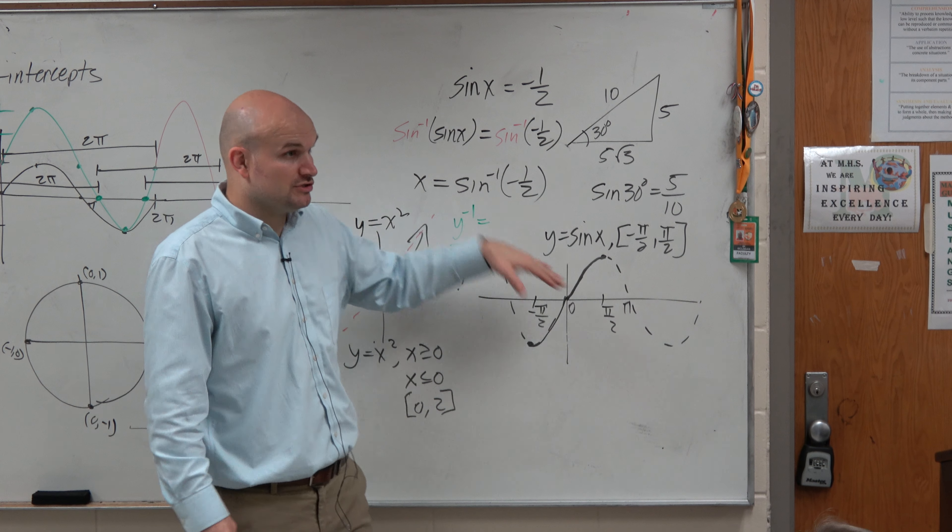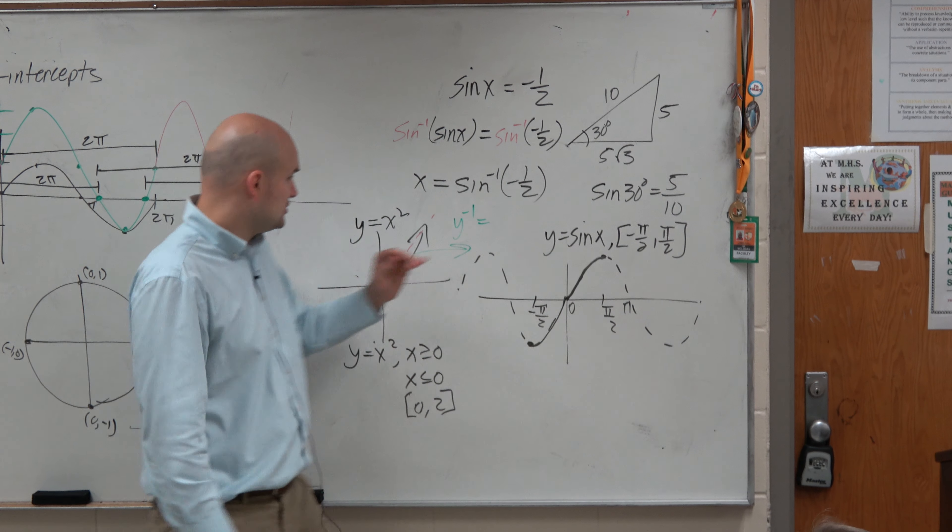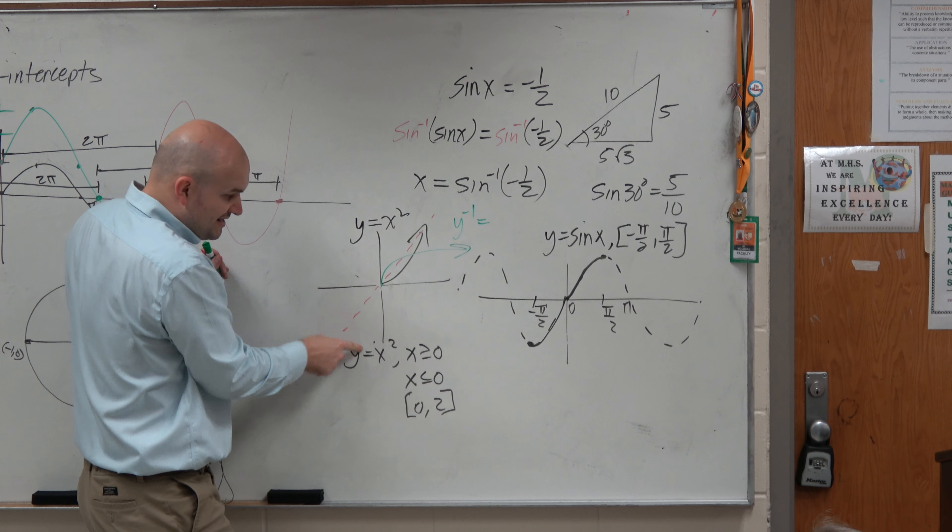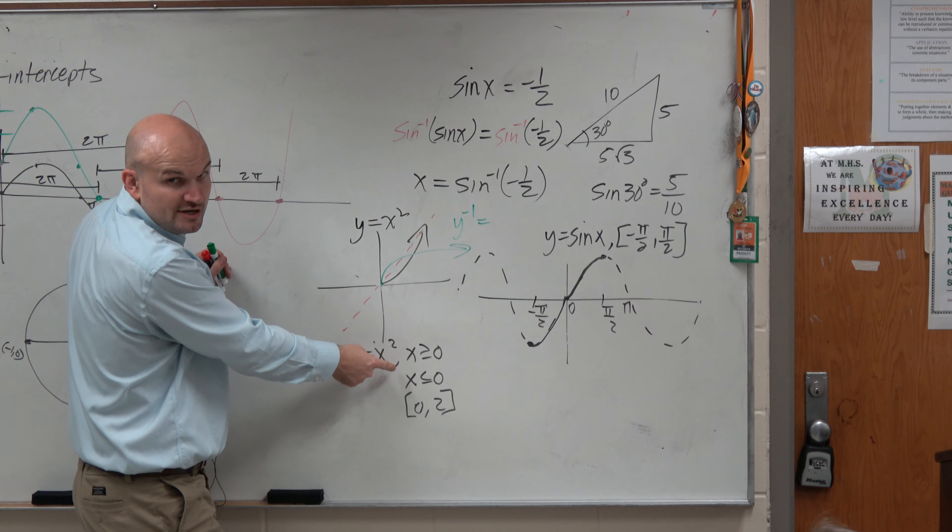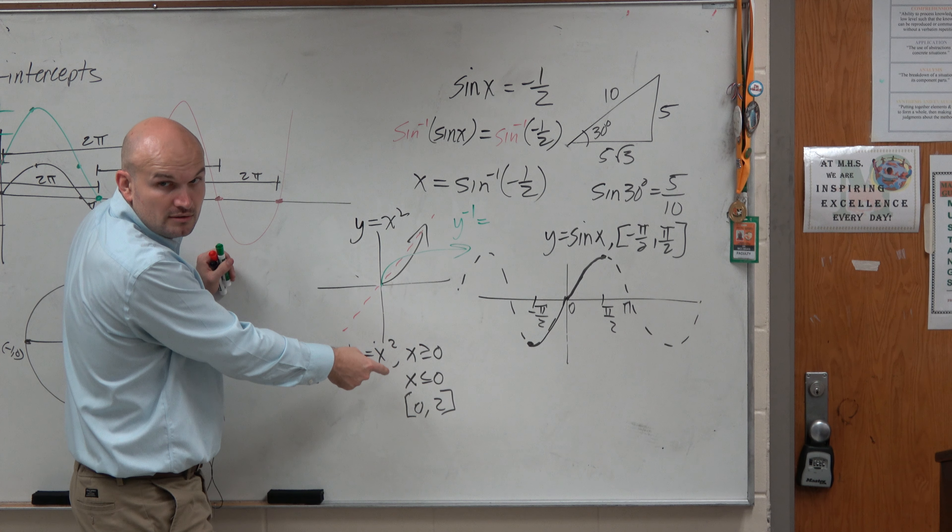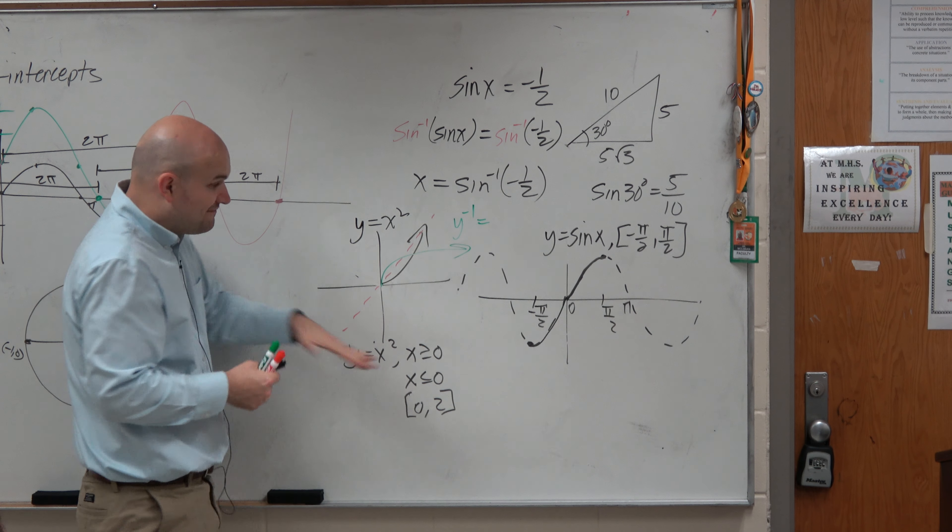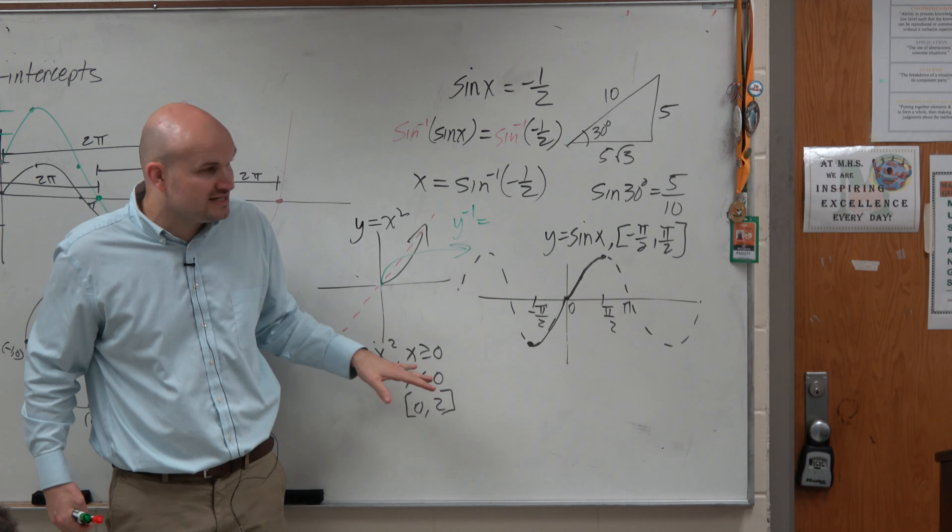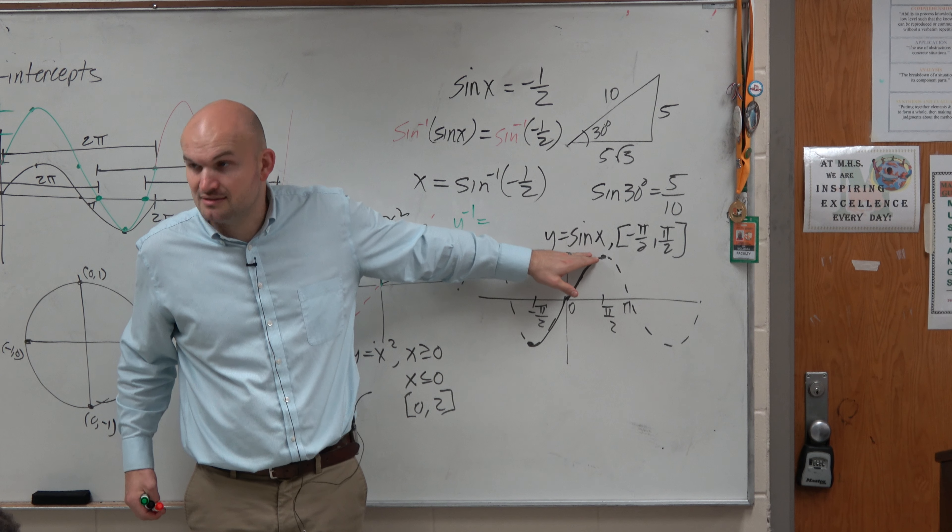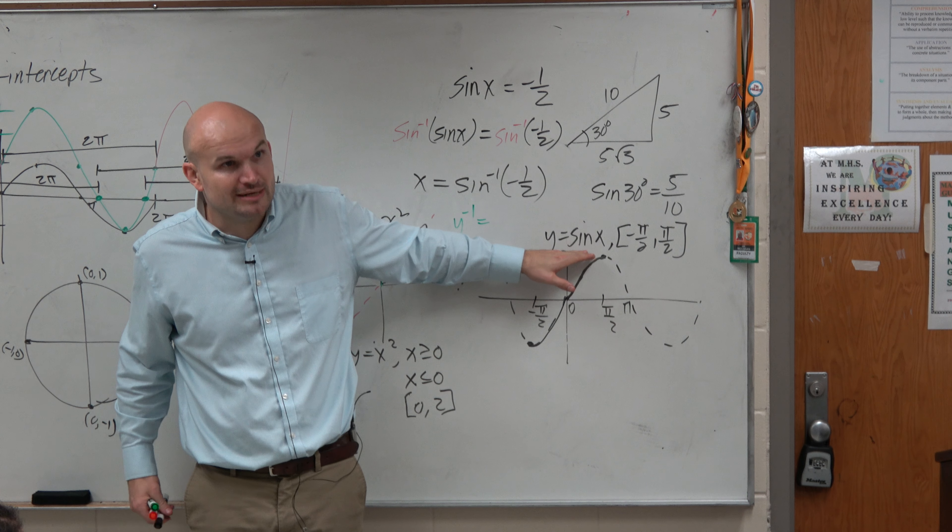We can't do it from the unrestricted, because that is non-invertible. Just like you can't find the inverse of x squared. You can find the inverse of x squared where x is greater than 0. Does that make sense? You have to have this defined as the restricted sine, meaning there has to be that restriction in place.